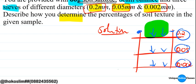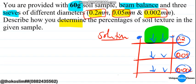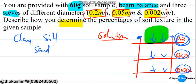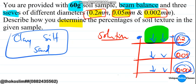So these diameters correspond to the three basic types of soil texture, which are clay, silt, and sand. Sand refers to particles of 0.2mm or larger, followed by silt which is 0.05mm, and clay which is 0.002mm.